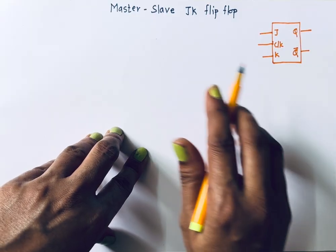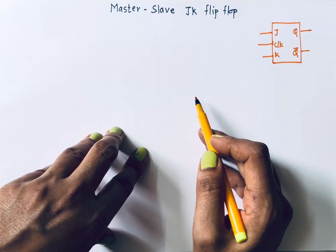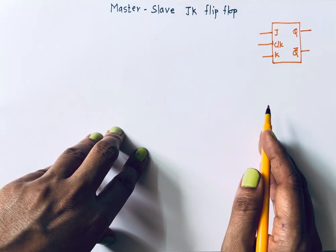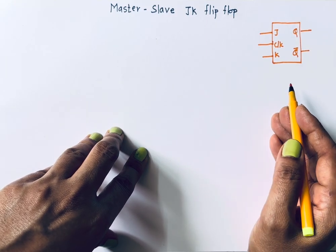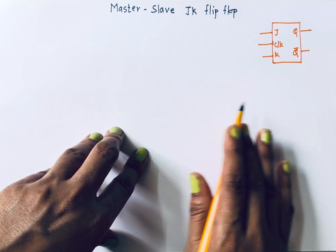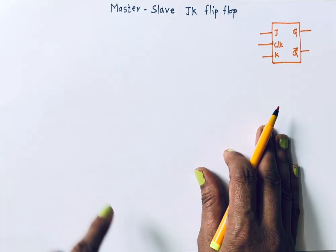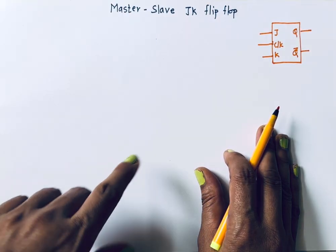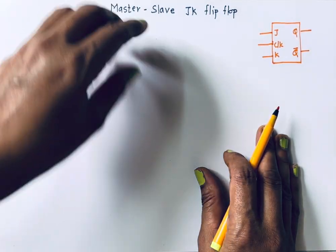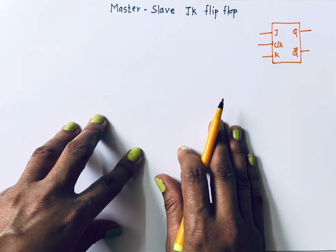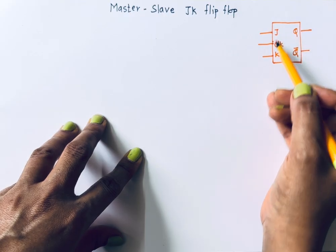In the case of the JK flip-flop, when both inputs are one, the next state output is the complement of the present state output. But the problem is the race around condition. I'll shortly explain the race around condition — you can check my video on JK flip-flop, SR flip-flop, and SR latch; the link is given in the description box. But just before starting with the master-slave JK, I'll explain the race around condition again. This is the block diagram of the JK flip-flop; it has J, K inputs, clock input, and Q and Q-bar outputs.